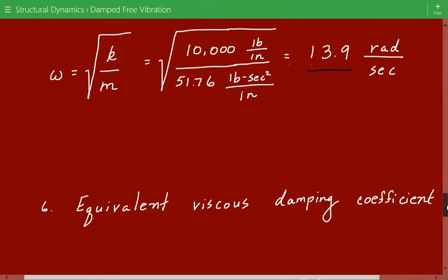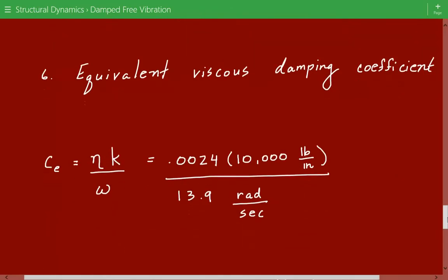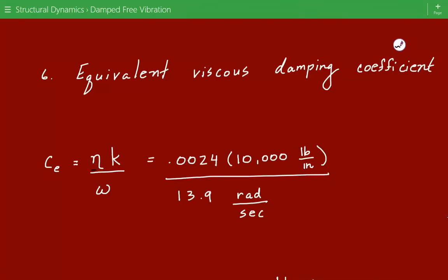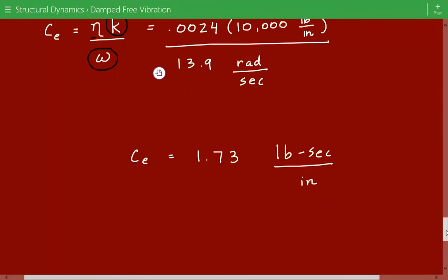And lastly, we can now calculate the equivalent viscous damping coefficient based on this relationship, that it's equal to eta, the structural damping coefficient, times the stiffness, divided by the circular natural frequency. So we just plug in the numbers, and we find that the equivalent viscous damping coefficient is equal to 1.73 pounds second per inch.